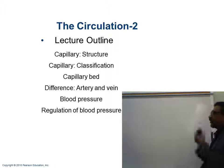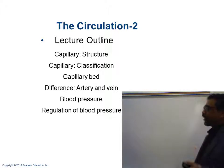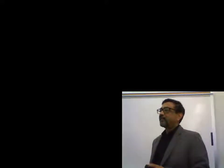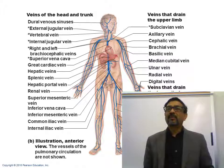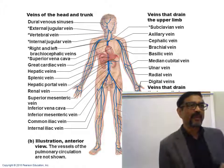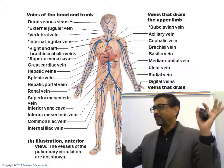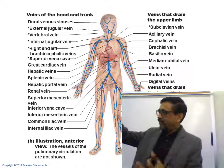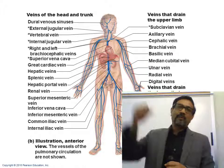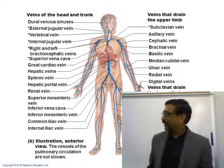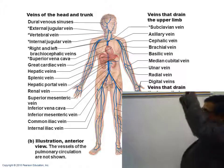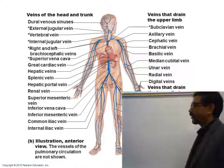Two large veins bring the deoxygenated blood into the right atrium of the heart — those are the superior and inferior vena cava. Deoxygenated blood is located in the right side, and the right atrium receives deoxygenated blood from the body. Superior vena cava comes from the upper part of the body, and inferior vena cava from the lower part.